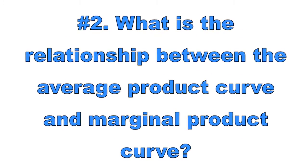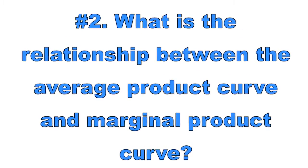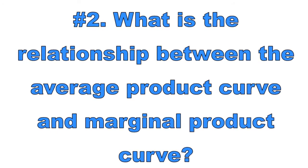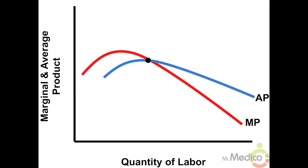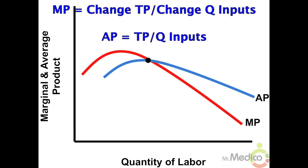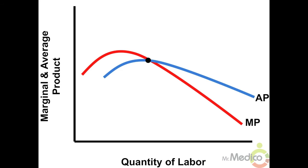Number two: what is the relationship between the average product curve and the marginal product curve? The marginal product and average product curves initially increase, then decrease, due to the law of diminishing marginal returns. Marginal product is the change in total product divided by the change in quantity of resources. Average product is the total product divided by the quantity of economic resources. The average product reaches its peak when it intersects the marginal product curve.